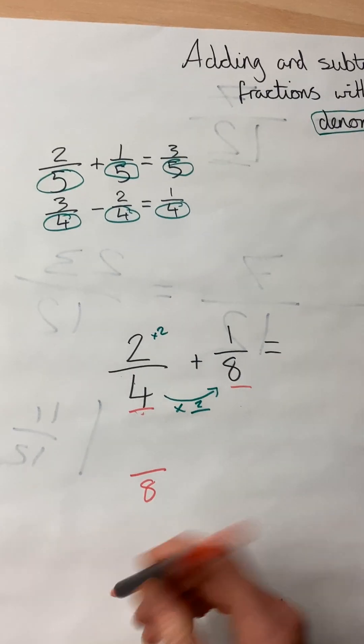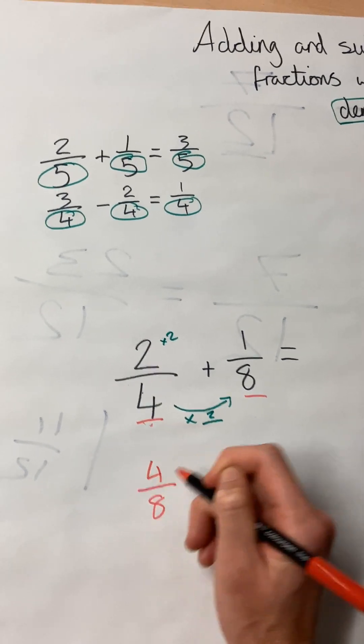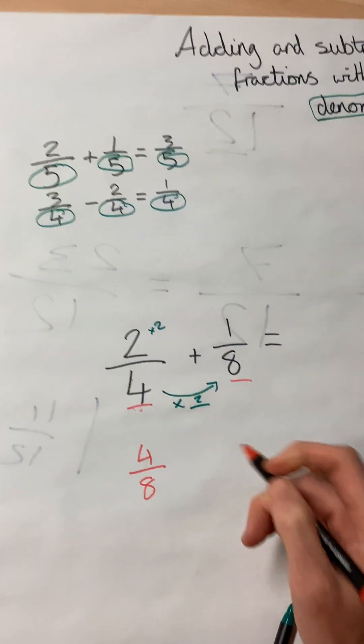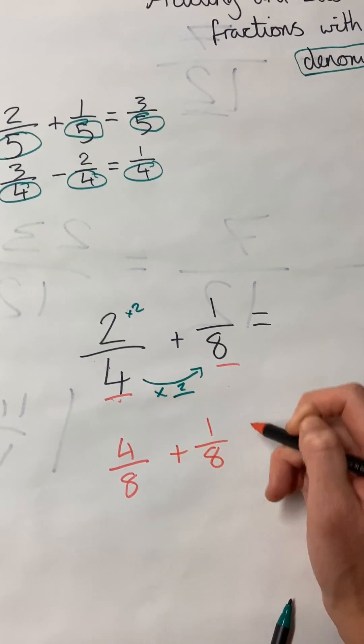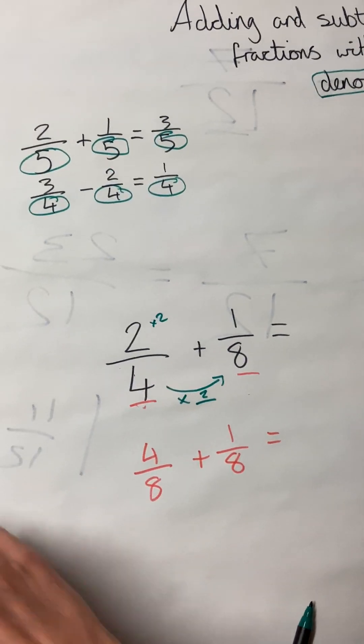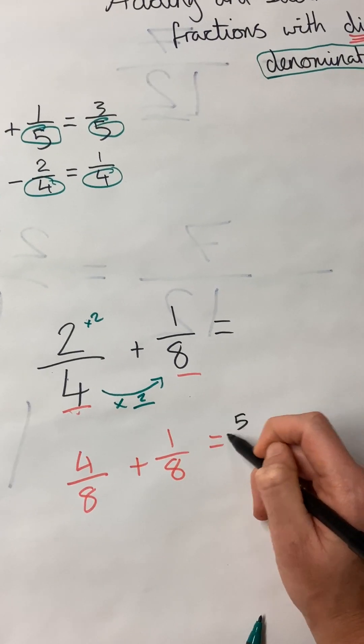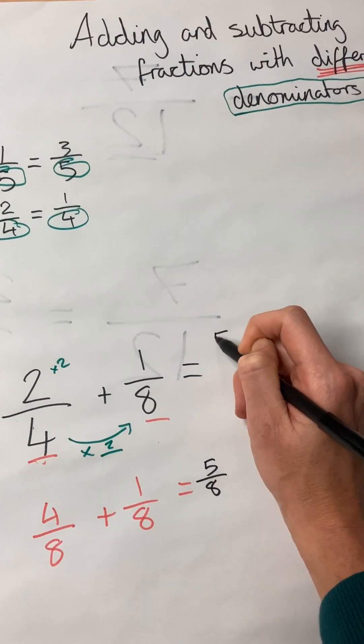So two-quarters is the same as four-eighths. And now we can do four-eighths plus one-eighth equals five-eighths.